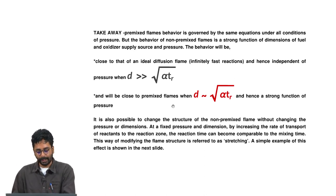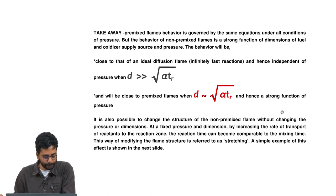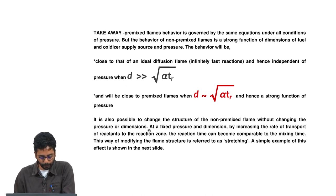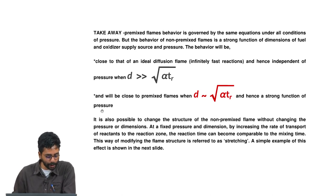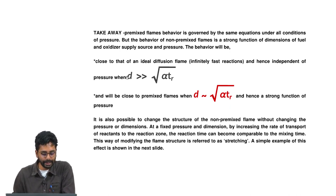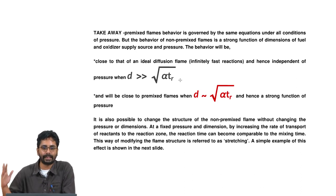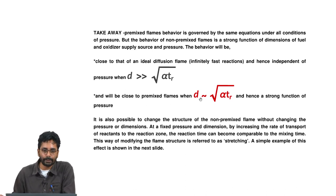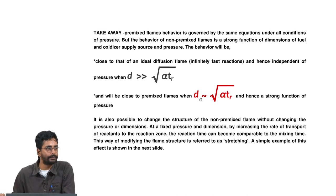It is also possible to change the structure of a non-premixed flame without changing pressure or dimensions. The two important takeaways are: when D >> √(α·tr), dynamics are controlled by mixing and not chemical reactions; when D becomes comparable to √(α·tr), dynamics become controlled by reaction rates and hence a strong function of pressure. We will take a break here.